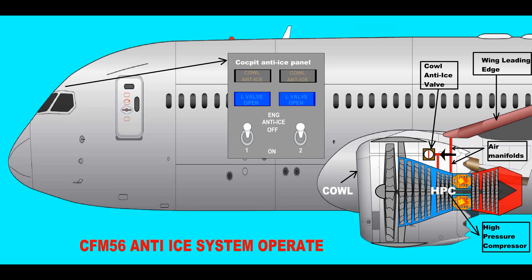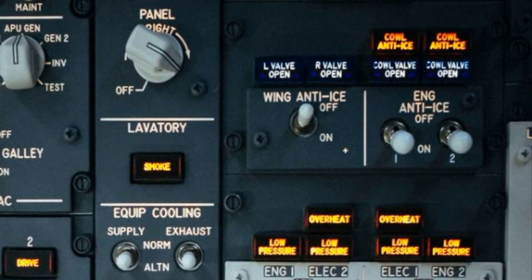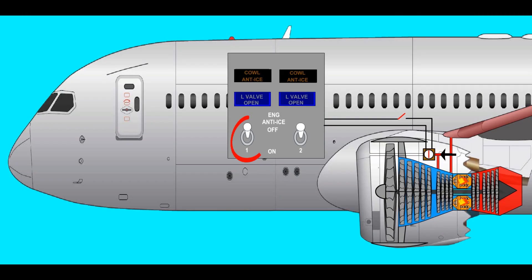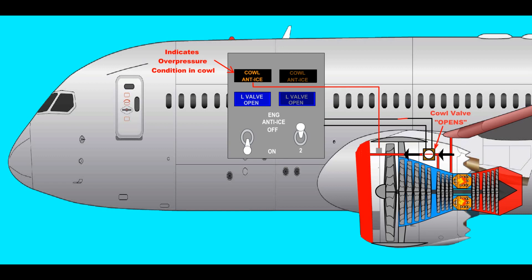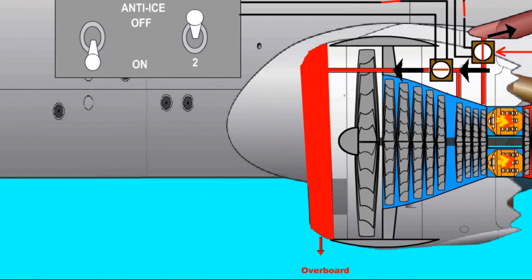These switches are the engine anti-ice panel on the cockpit overhead panel and the on-off switches on the wing anti-ice panel. The hot air required for the anti-ice system is taken from the fifth and ninth stages of the CFM-56 engine high-pressure compressor. To prevent icing of the engine cowl, hot air delivery to this area is controlled by the engine anti-ice panel on the cockpit overhead panel. When the relevant engine switch is set to on, the cowl valve open lamp illuminates, and hot air from the compressor reaches the engine cowl and heats that area. The cowl anti-ice lamp on the same panel is a warning lamp that activates in case of high pressure in the system. The air used for heating the cowl area is discharged into the atmosphere through a hole in the bottom of the cowl.